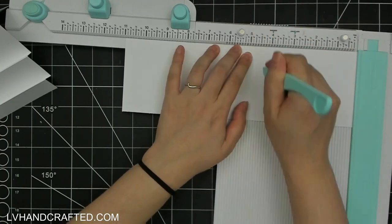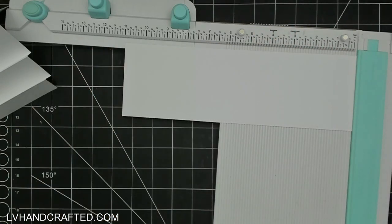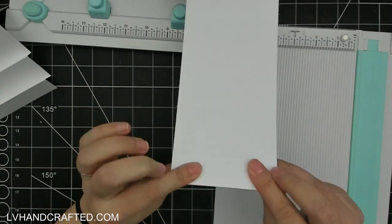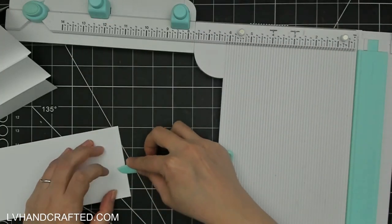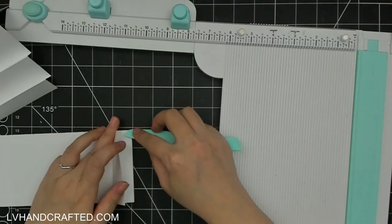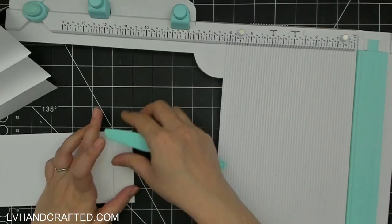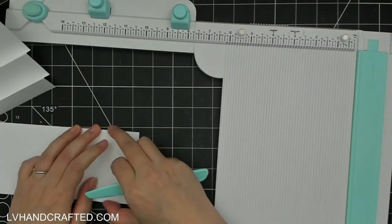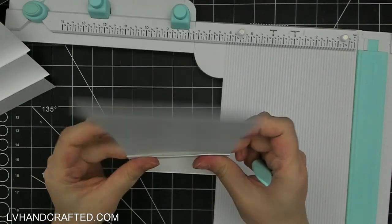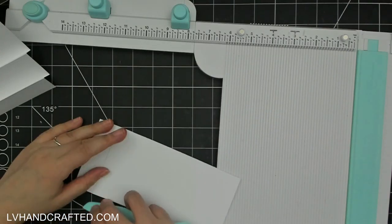Now your two inch scoreline and your four and a half inch scoreline, those are going to be valley folds. So when you fold this up you want to do a mountain fold at the one inch, valley fold at two, mountain fold at three and three quarters, valley fold at four and a half, and then mountain fold at seven and one quarter.